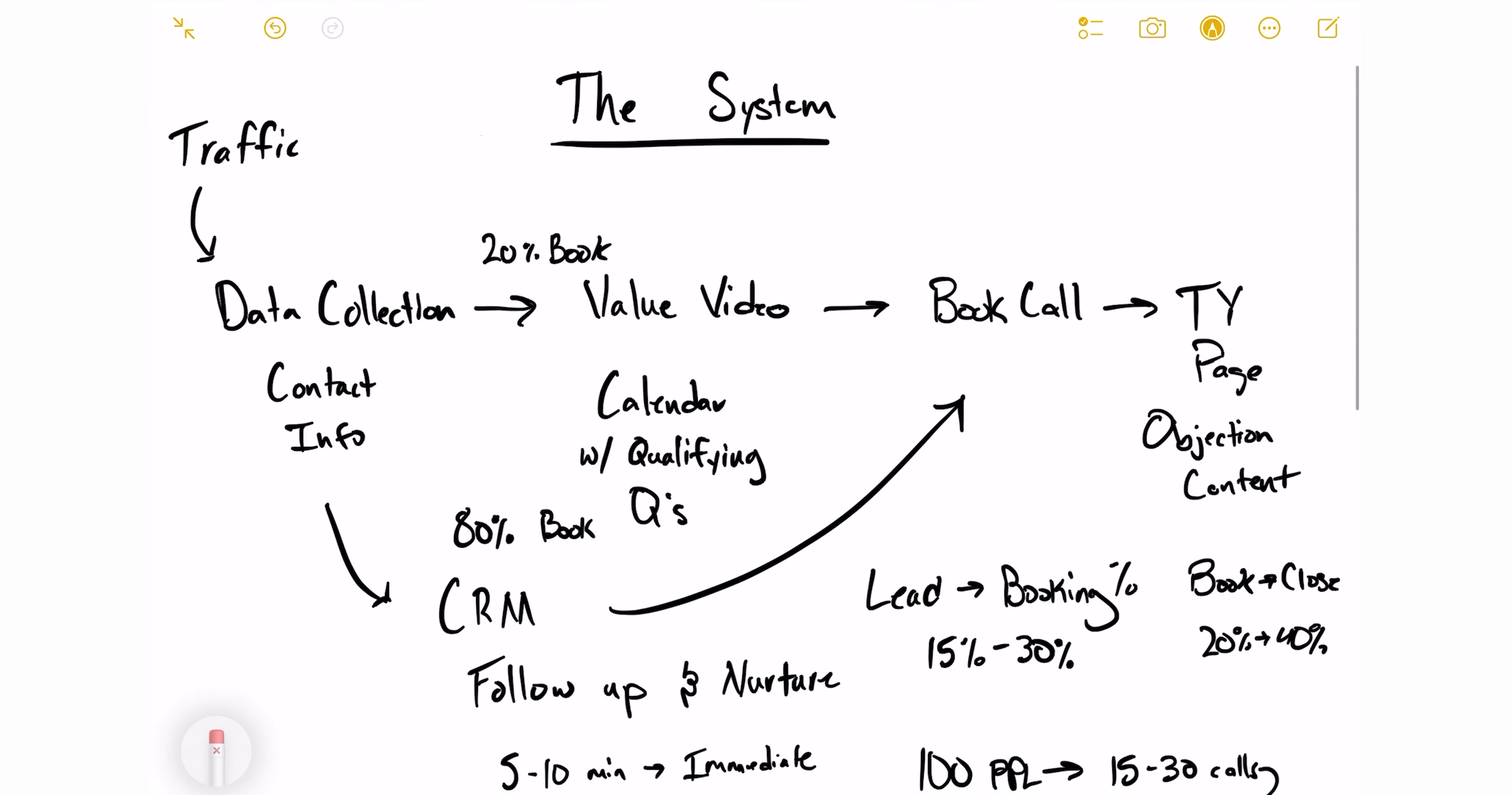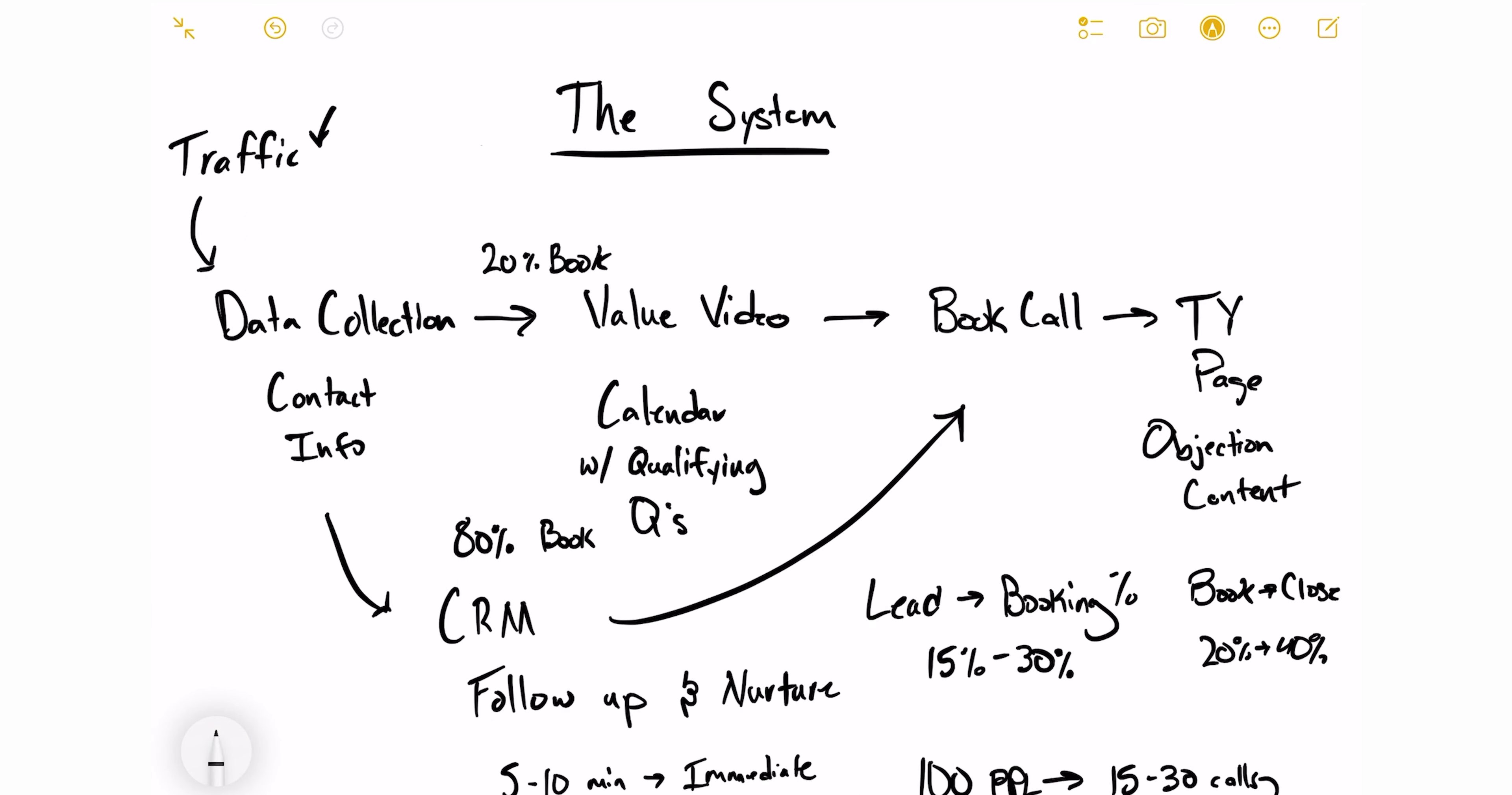What's going on guys. So as far as the system for getting leads, it's pretty simple. We have a couple of different systems here, but this is the one we mainly use and let me walk you through it. So trying to get traffic into the system, first part of the system is data collection. And what that means is we're getting the contact information for these leads,